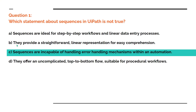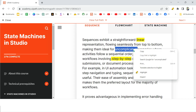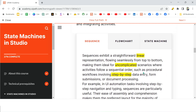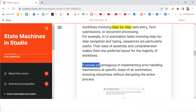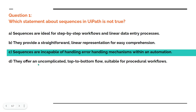Option B — they provide a straightforward linear representation for easy comprehension — is also correct. Option D — they offer an uncomplicated top-to-bottom flow suitable for procedural workflows — is correct; notice the word 'uncomplicated' applies to sequences. So C is wrong because sequences actually have advantages in implementing error handling — they are not incapable of it. Your right answer is C.